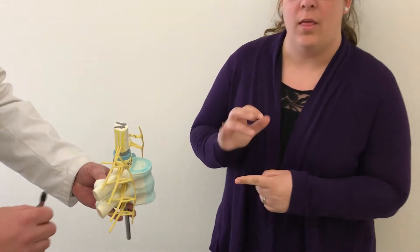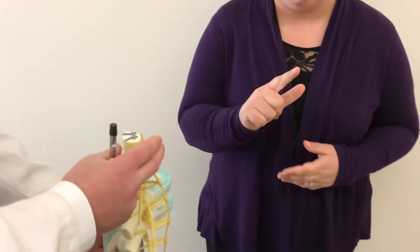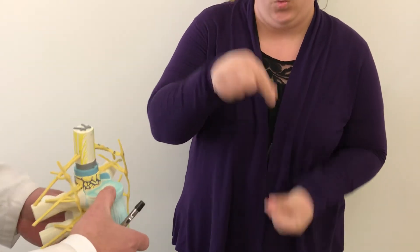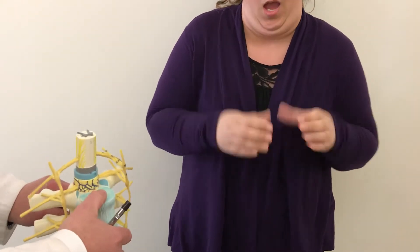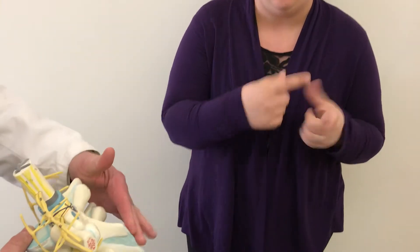Okay, so this is the spinal column. This is the spinal cord. These are the bodies of the vertebrae, so these are going to be anterior, and the spinous processes are posterior.